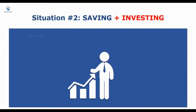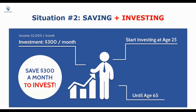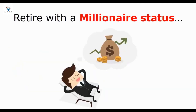Assume that your income is still $2,000 a month, but in this case you decide to save a small percentage of your income — for example, $300 a month — to invest. Assume that you start investing at age 25 and continue to invest $300 a month until you retire at age 65. With only a 10% annual return from the stock market, you'll be able to turn your $300 investments into $1.6 million in 40 years. Compared to the previous case where you save all your money, with small investments of only $300 a month you can easily double your net worth, build a satisfying retirement, and retire wealthy with a millionaire status.